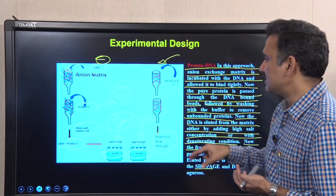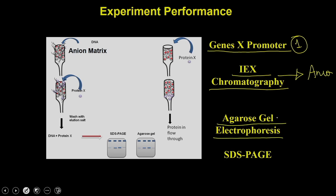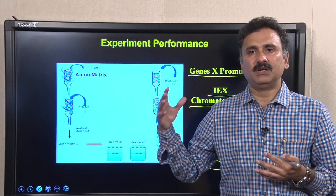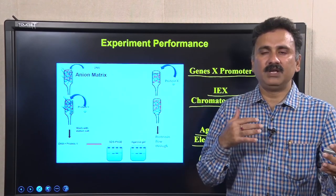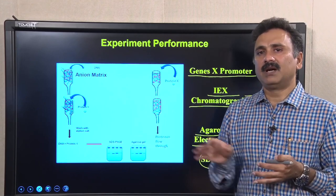To execute these experiments, you need to: (1) clone the promoter of gene X, (2) perform ion exchange chromatography, (3) run agarose gel electrophoresis to see the promoter DNA pattern, and (4) run SDS-PAGE to see the transcription factor pattern. By fine-tuning the purification — for example adding gel filtration or affinity chromatography — you can remove outliers and identify the specific transcription factor.